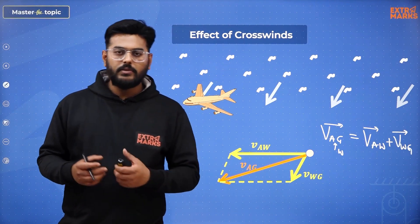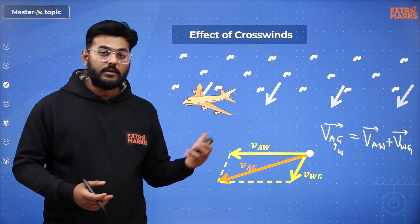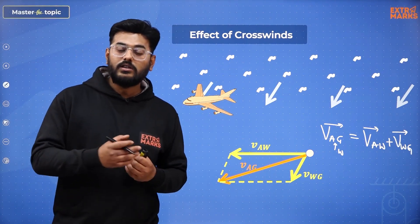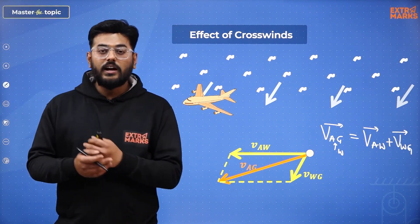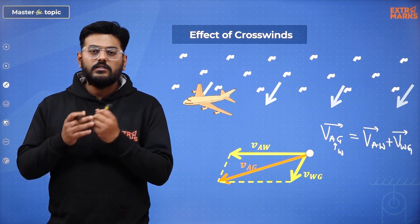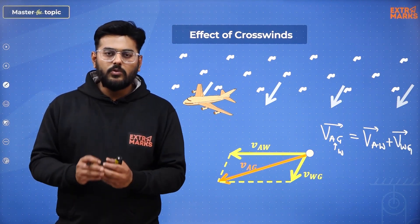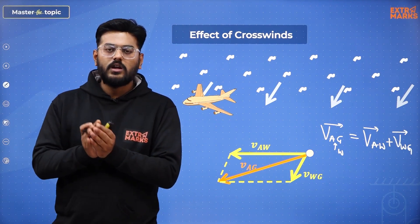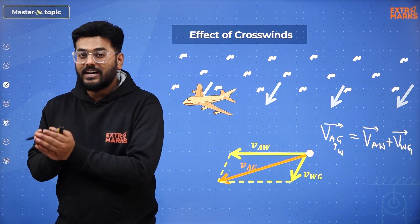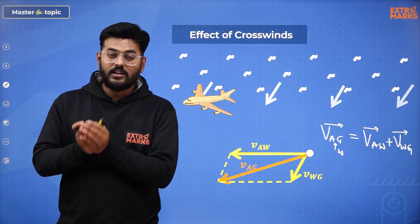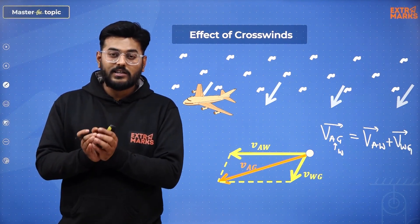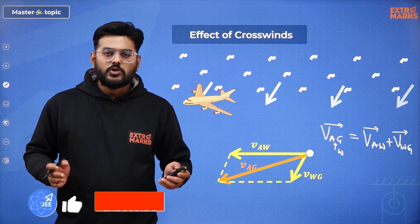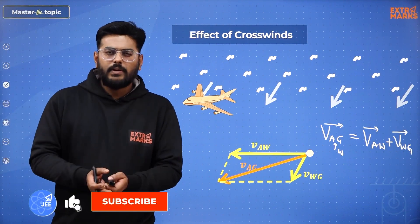Winds can be headwinds, tailwinds, or crosswinds. Crosswinds can actually alter the direction of an aircraft, and hence the pilot should always be very keen with his observation on the heading indicator to know in which direction the aircraft is actually steering.